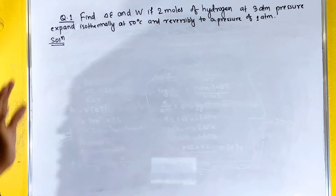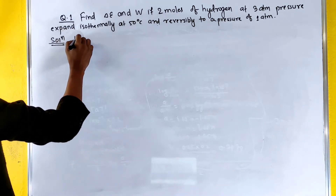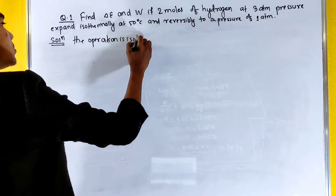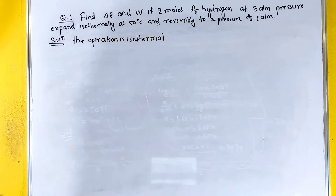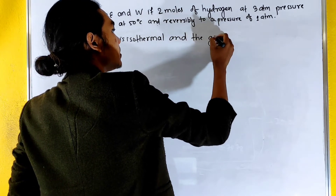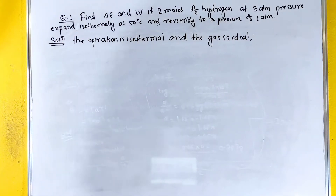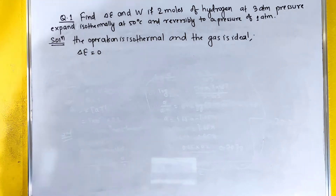The process is isothermal, meaning temperature is constant throughout the operation. The gas is ideal. Since this is an isothermal process with an ideal gas, delta E equals zero.